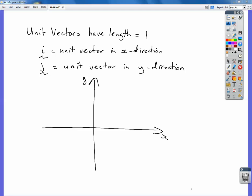This video is about vectors in i and j notation. What we mean by that is we're talking about a unit vector. A unit vector is a vector that has length equal to one.